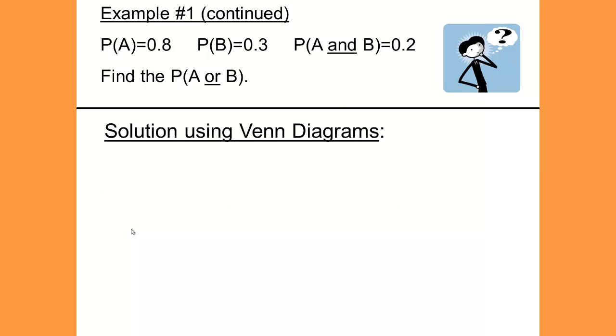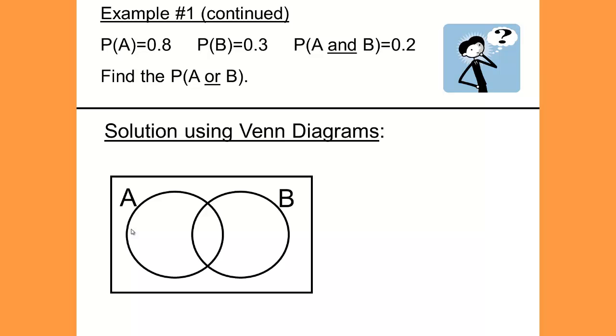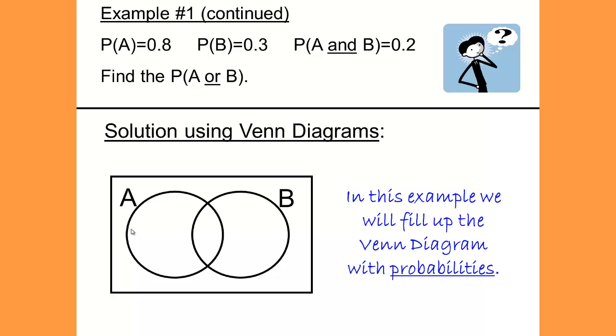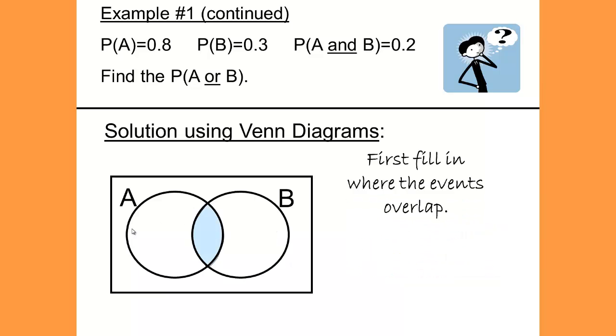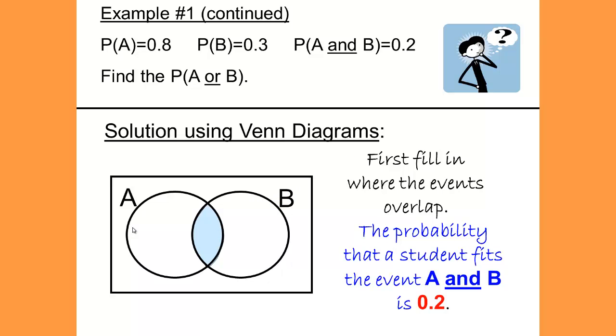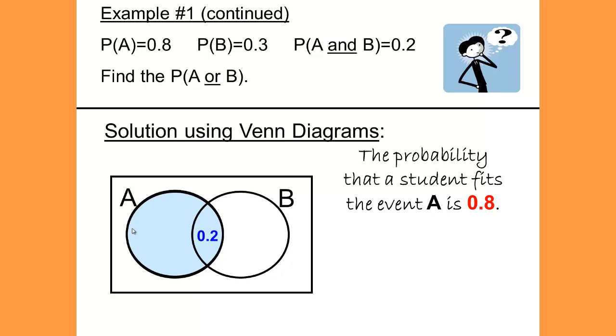Example number 1 using the Venn diagrams. First draw your Venn diagrams. In this example, we will fill up the Venn diagrams with our probabilities. We always first fill in where the two events overlap. The overlap is the intersection or the AND. Therefore, the probability that a student fits into event A and B is 0.2. The probability that a student fits in event A is 0.8, and 0.2 is already in circle A. So how much is left for the rest of circle A? Remember that everything in A has to add up to 0.8, so that would be 0.8 minus 0.2, which is 0.6.